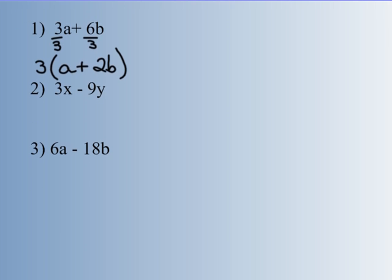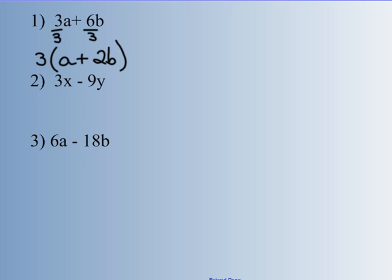Number 2 — what do 3x and negative 9y have in common? x and y is not common, but a factor of 3 is common to both. So taking out that 3 — 3 divided by 3 gives me 1x, and negative 9 divided by 3 gives me negative 3y. Put parentheses around that binomial and put the common factor out in front. So 3x minus 9y in factored form, taking out the common factor of 3, is 3 times the quantity x minus 3y.